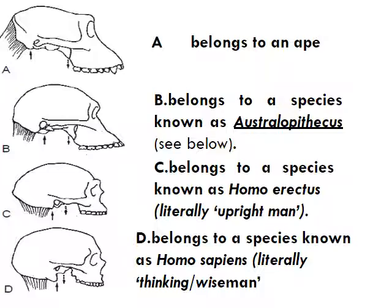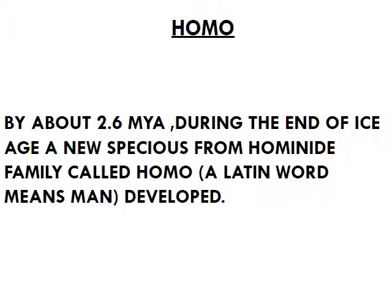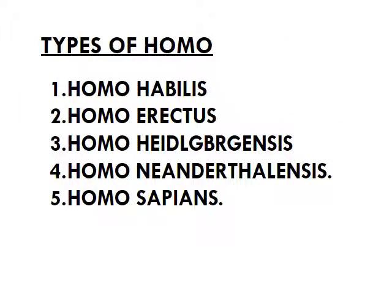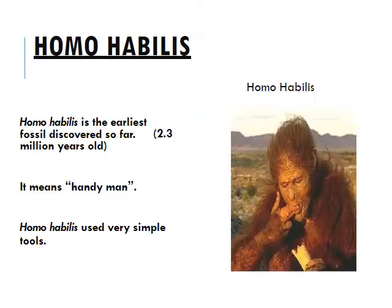By about 2.6 mya, during the end of the ice age, a new species from the hominid family called Homo developed features including a big brain, small skull projection, projected front jaws, and small teeth, and began to live on the ground rather than trees. Big brain means intelligence; smaller teeth and jaw means changed food habits; ground life means upright walking was introduced. Types of Homos include: Homo habilis, Homo erectus, Homo heidelbergensis, Homo neanderthalensis, and Homo sapiens.